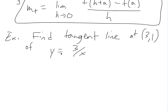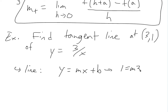To get the tangent line, we know a line's equation is y equals mx plus b. We know that at the point (3, 1), y is 1 and x is 3, so we get: 1 equals m times 3 plus b. Rearranging for b gives b equals 1 minus 3m. But we need the slope first — this slope is the tangent line slope, so we need to find m_t.